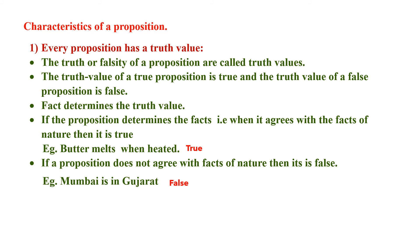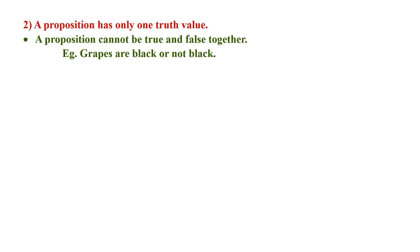For example: 'Butter melts when heated' — we always observe butter melting when heated, so it is a true proposition. 'Mumbai is in Gujarat' is a false proposition because we observe that Mumbai is in Maharashtra. The second characteristic: a proposition has only one truth value — a proposition cannot be both true and false at the same time. For example: 'Grapes are black or not black' — they cannot be both black and not black.